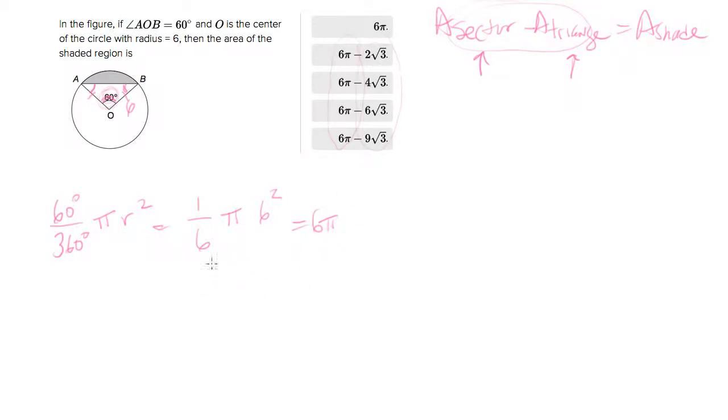So the area of the triangle - now I'm going to redraw the triangle bigger over here to make it easier to discuss. This is an equilateral triangle so it has measures of 60-60-60.